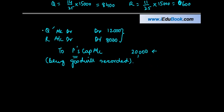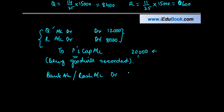The second entry: Q and R bring in cash, so we debit Bank/Cash account because the asset is increasing. Debit bank account by twenty thousand — Q is bringing in twelve thousand and R is bringing in eight thousand — being cash received.